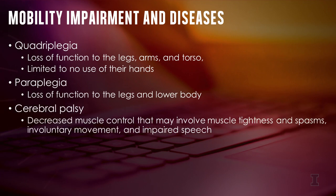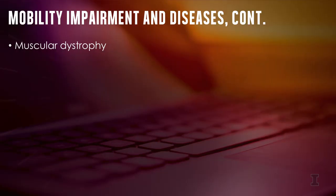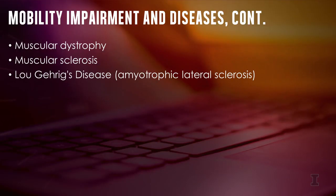Individuals with cerebral palsy have experienced a traumatic injury to the brain that usually occurs during fetal development or shortly after birth. In general, people with cerebral palsy have decreased muscle control, which may involve muscle tightness and spasms, involuntary movement, and impaired speech. Other diseases and congenital forms of mobility impairment like muscular dystrophy, multiple sclerosis, and Lou Gehrig's disease, also known as amyotrophic lateral sclerosis, involve different forms of progressive muscle or nerve degeneration that lead to specific functional limitations.